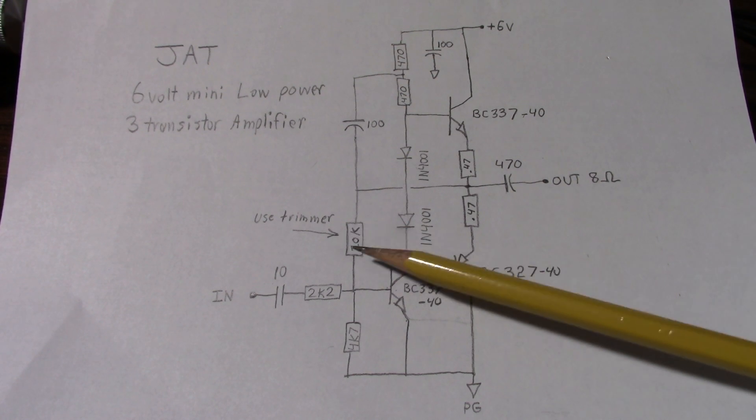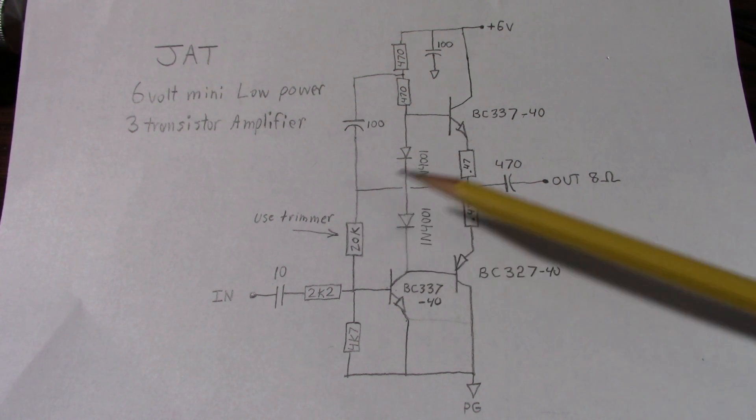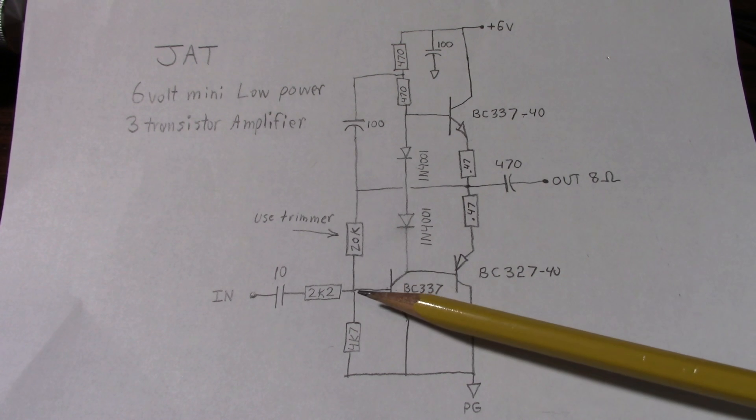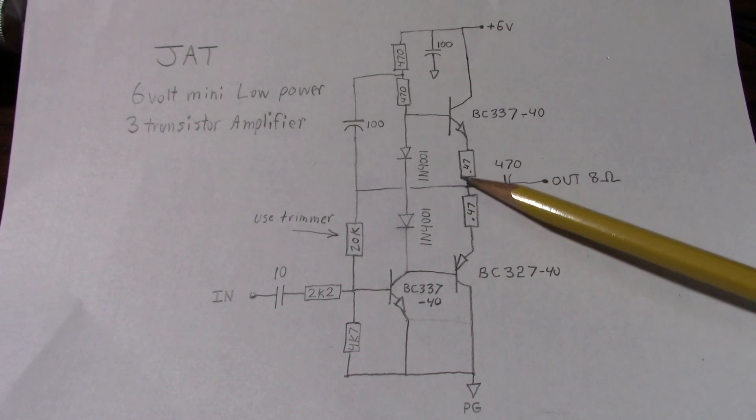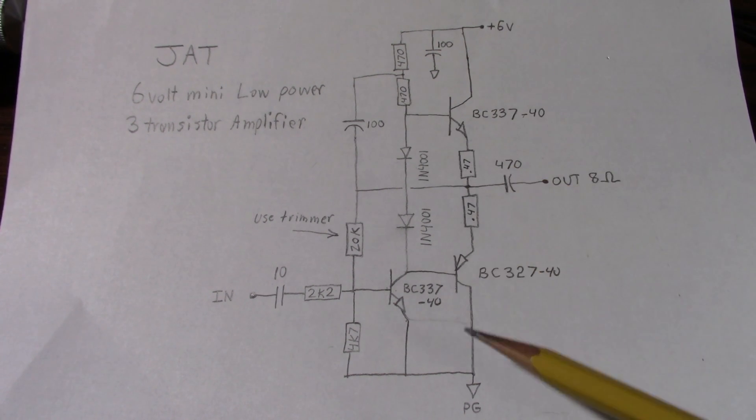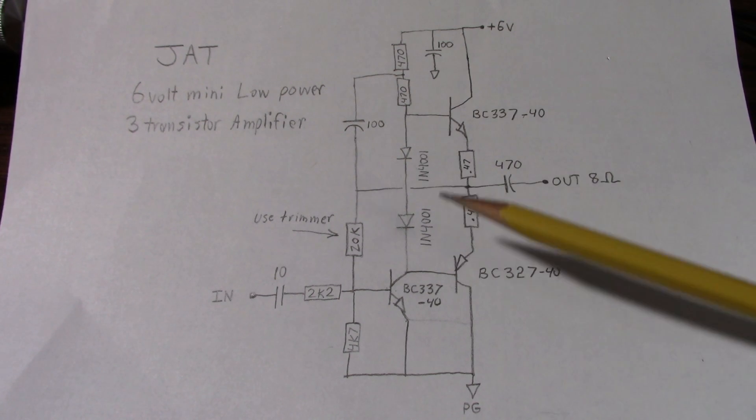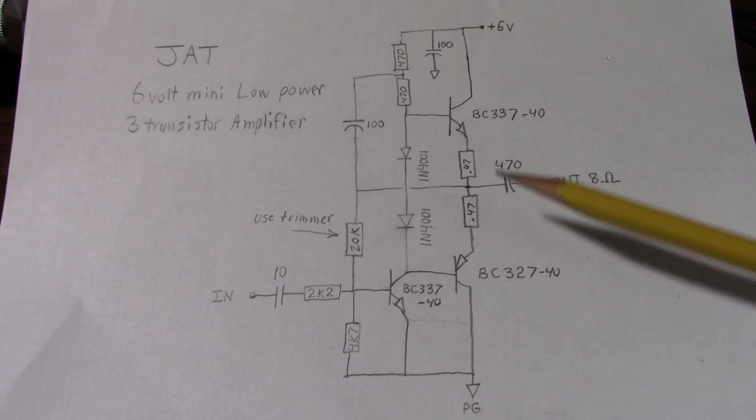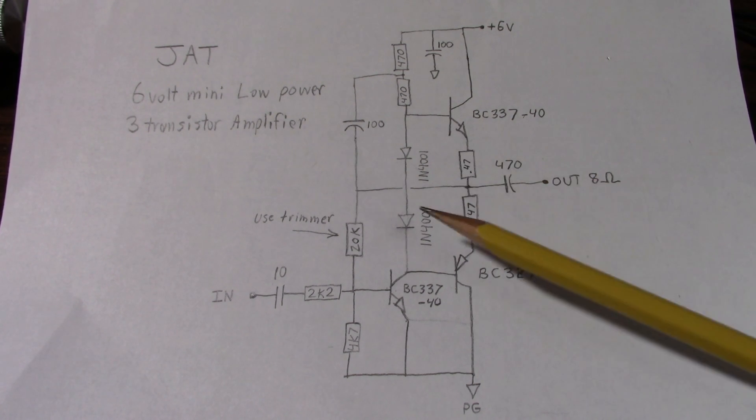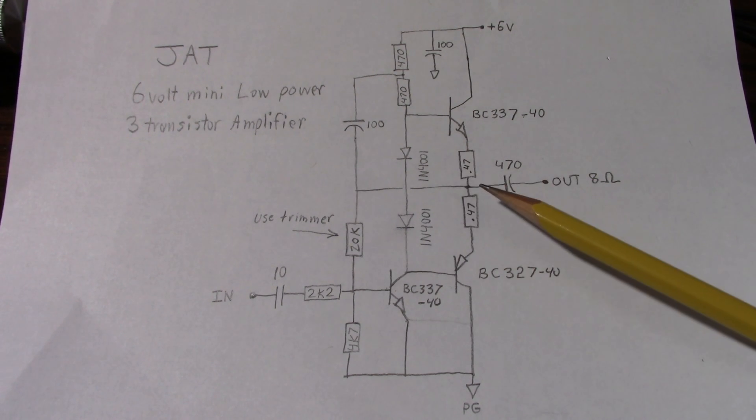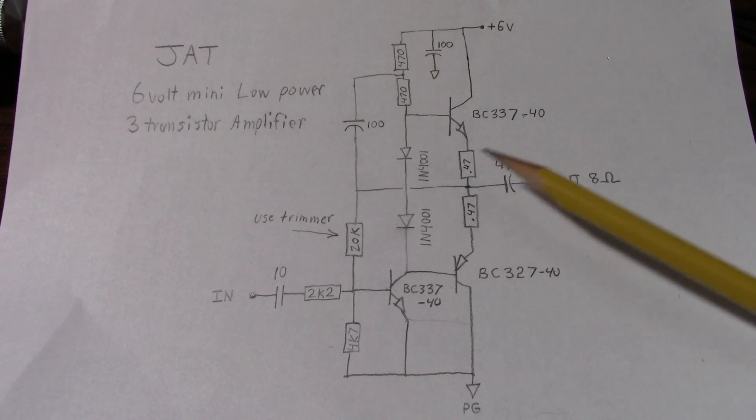This resistor here is the feedback resistor. It's also responsible for biasing this transistor. And you have to get the value just right to have the voltage at the output stage here to be one half the supply voltage. If it's shifted too far either way, the amplifier will start clipping on one side before the other, reducing its dynamic range. Or in other words, its maximum output power.